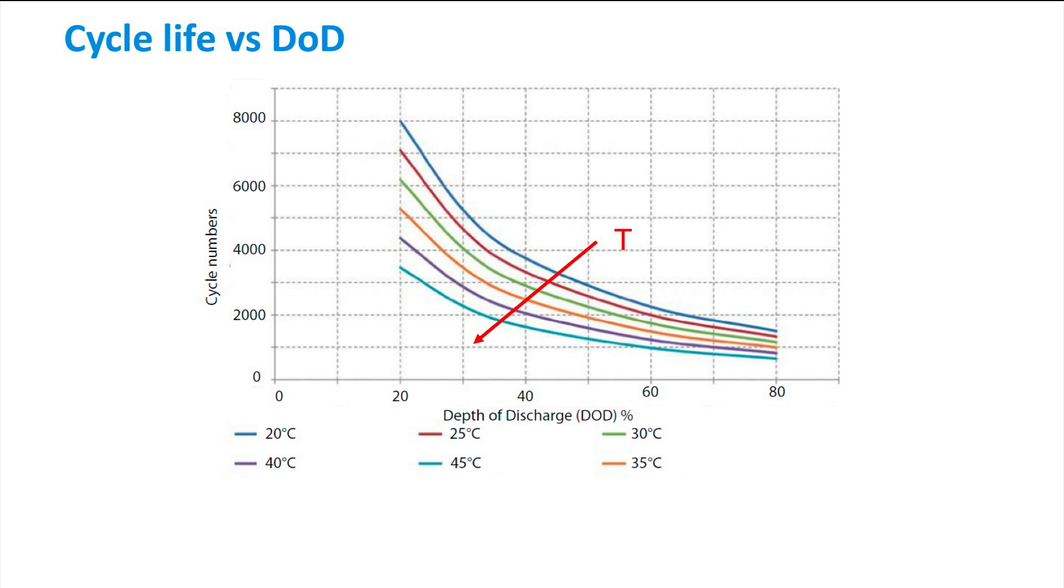From this figure, we can see the cycle lifetime as a function of the depth of discharge for different temperatures. For colder operating temperatures, we can see that a battery has a longer cycle life over its lifetime. Further, the cycle lifetime also strongly depends on the DOD where it is higher for a smaller depth of discharge. This means that the battery will last longer if the average depth of discharge can be reduced during its lifetime.